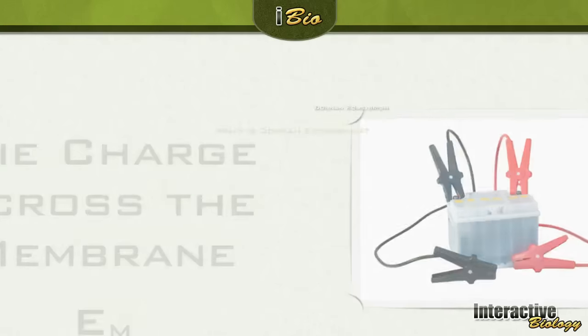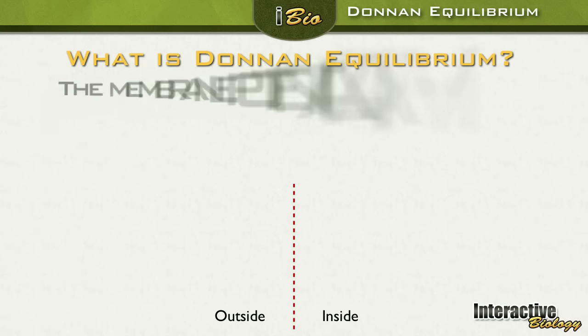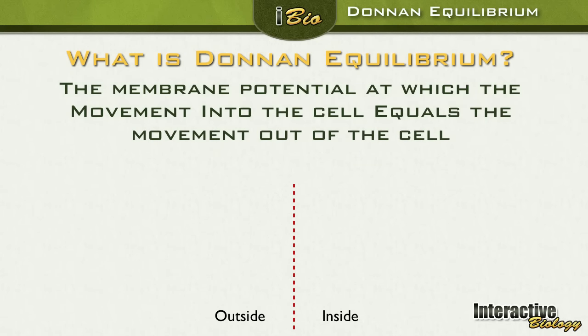So then what is the Donnan equilibrium? The Donnan equilibrium is the membrane potential at which the movement into the cell is equal to the movement out of the cell. The symbol for this is going to be E sub Ion — so whatever ion we're talking about, if it's sodium it'll be E sub Na, if it's potassium it'll be E sub K.